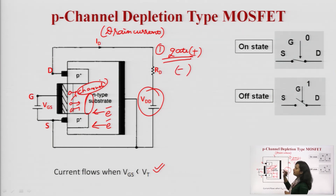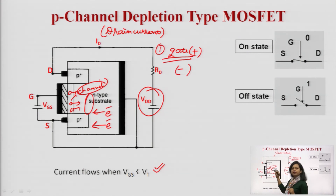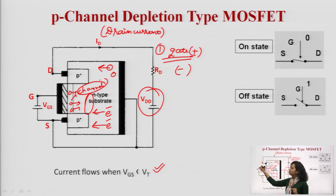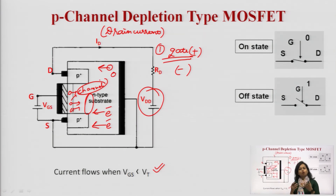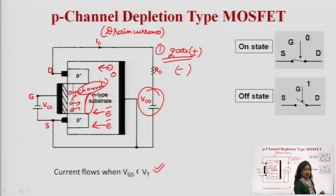If you apply negative potential at the gate, holes will be attracted towards the gate terminal. Majority of holes are already available in the channel. In the N-type substrate, minority charge carriers are holes, and because of this negative potential they will also be attracted towards the channel, increasing the concentration of holes in the channel. This means drain current will increase. This is the representation of the on-state and off-state behavior of this MOSFET.